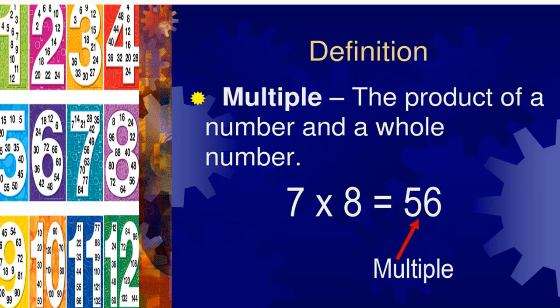What is a multiple? The product of a number and a whole number. We are multiplying a number with 1, 2, 3, 4, 5 and so on, so there is no end. One example here: 7 8's are 56. When I am multiplying the two numbers, I am getting the product. This product is nothing but the multiple of the given numbers.